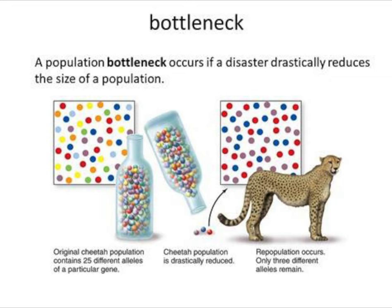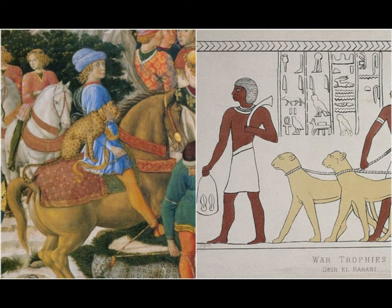Around 5,000 years ago, humans found out that cheetahs were interesting wild animals — ones that could be more easily tamed than a lion or a leopard — and found that they would make good pets for royalty. So pharaohs would have them, and kings and emperors would have them.